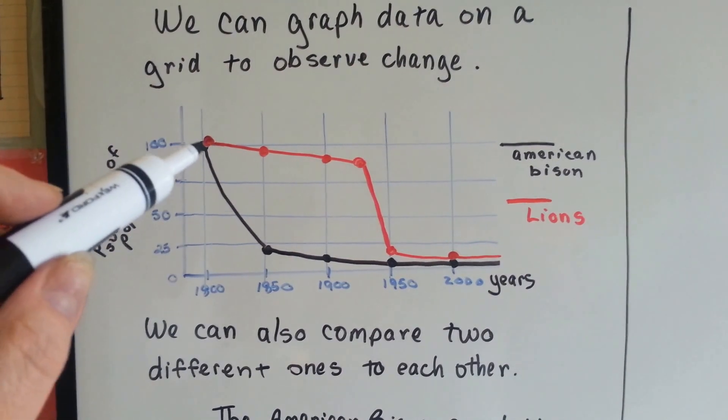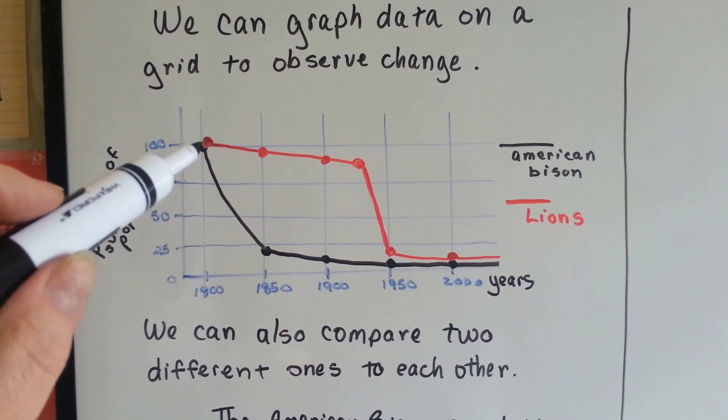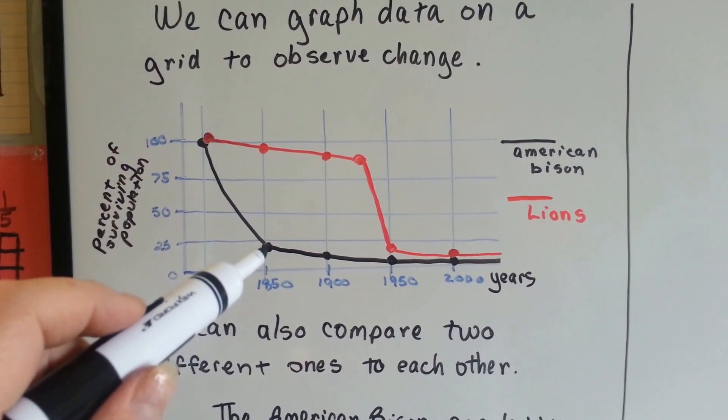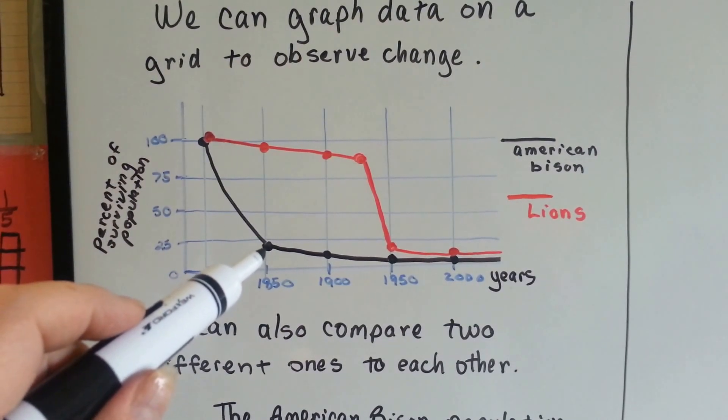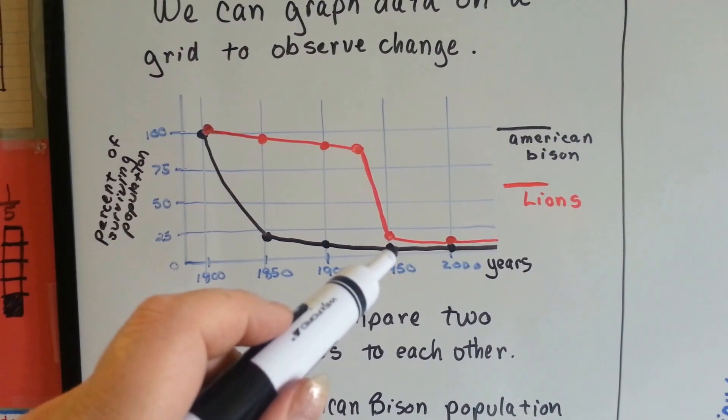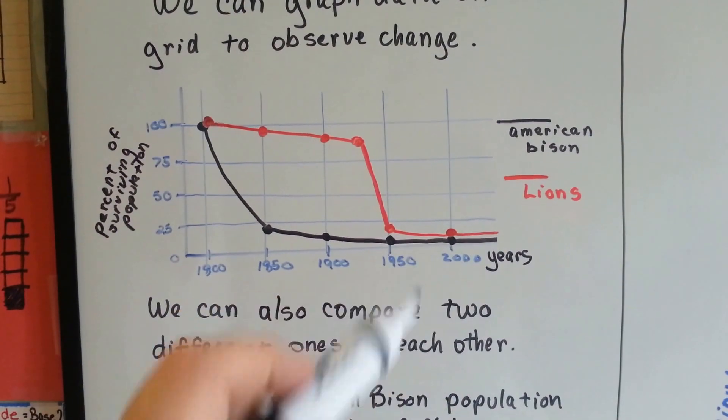In the year 1800, American bison and lions were at 100%. By 1850, American bisons were below 25%. By 1950, lions were pretty much with them, and now they're almost extinct.